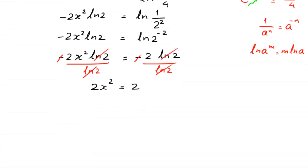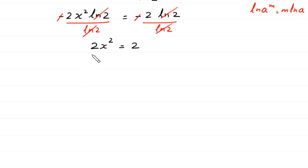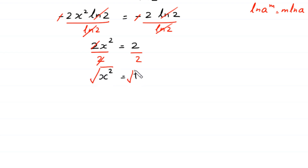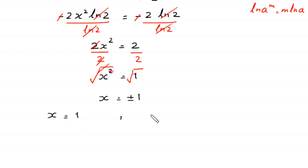Dividing both sides by ln of 2, we get 2x squared equals 2, so x squared equals 1. From here we get two values of x: x is equal to 1 and x is equal to negative 1.